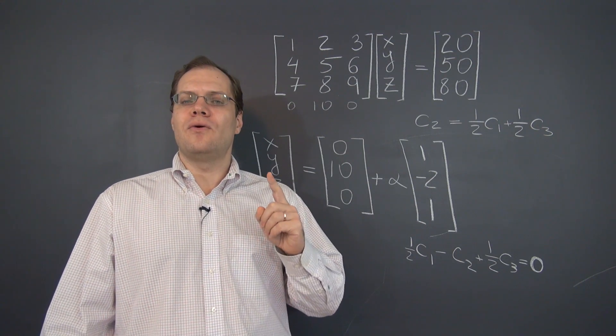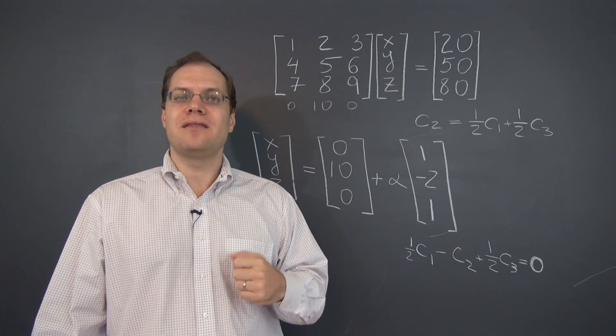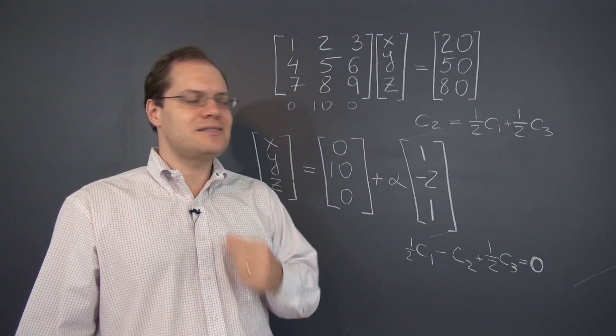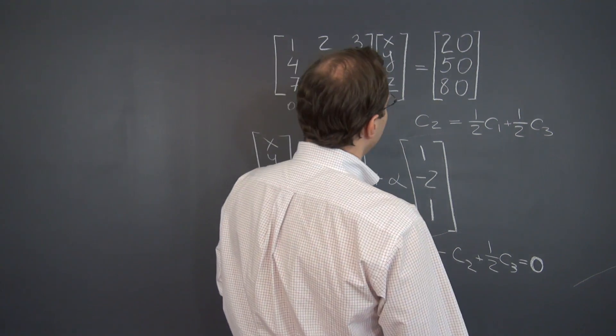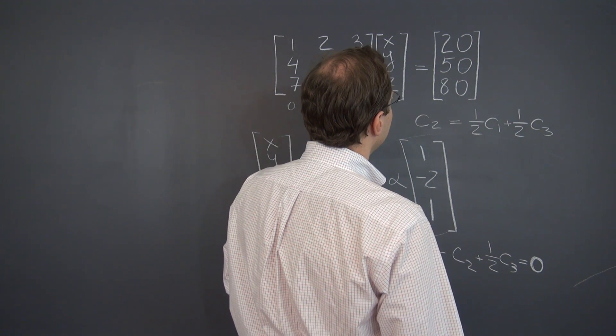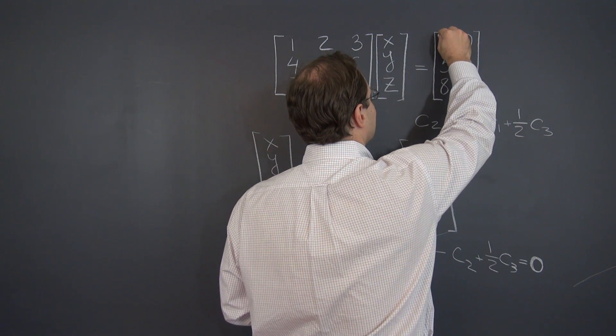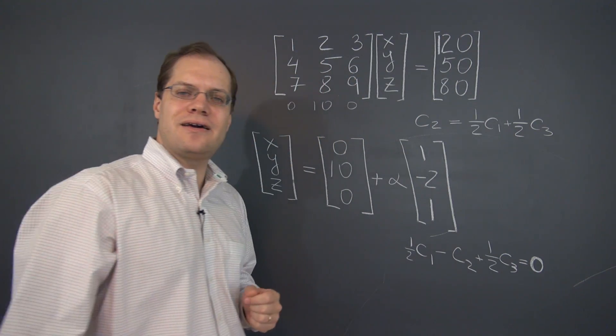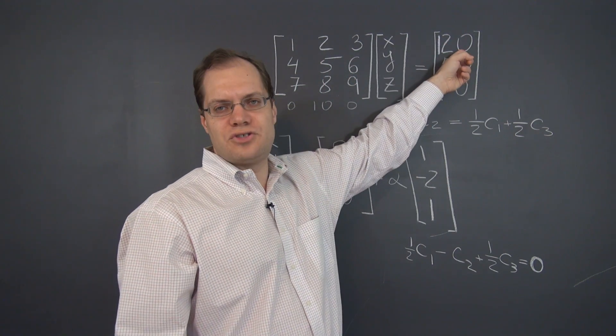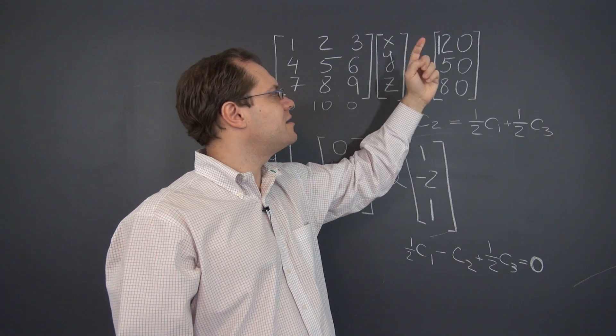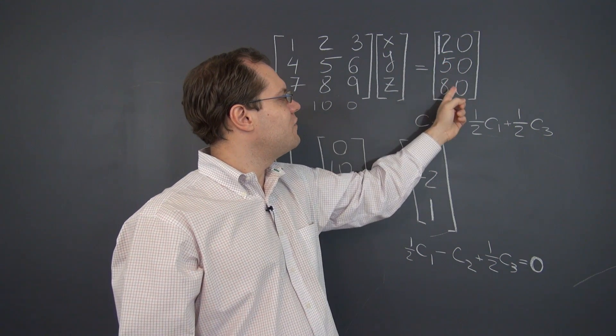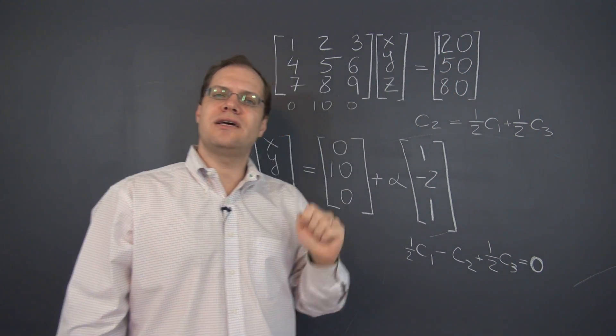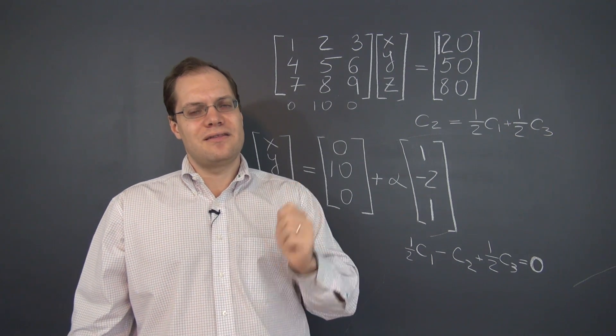So now let me make one small change to the system. That will give us a new system and let's talk about that system. Let me, let's see, sneak a 1 in here. So instead of 20 on the right hand side, let's have 120. So the vector on the right hand side has 120, 50, 80. So take a moment now to think about this system.